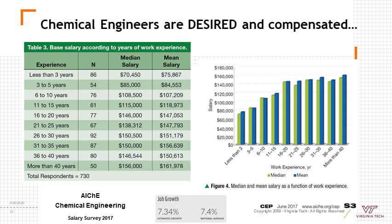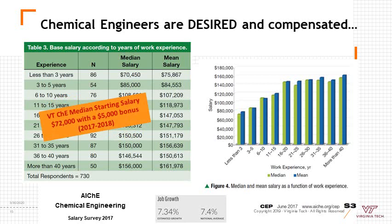Chemical engineers are highly desired and compensated. According to AICHE, the career organization for chemical engineers, which publishes salary data every several years, chemical engineers start out in about the $70,000 range. In 2018, chemical engineering students at Virginia Tech started at $72,000 with a $5,000 bonus. Salary grows significantly over the career. Unemployment for chemical engineers is very low, typically in the 2% to 3% range, associated with those changing roles.